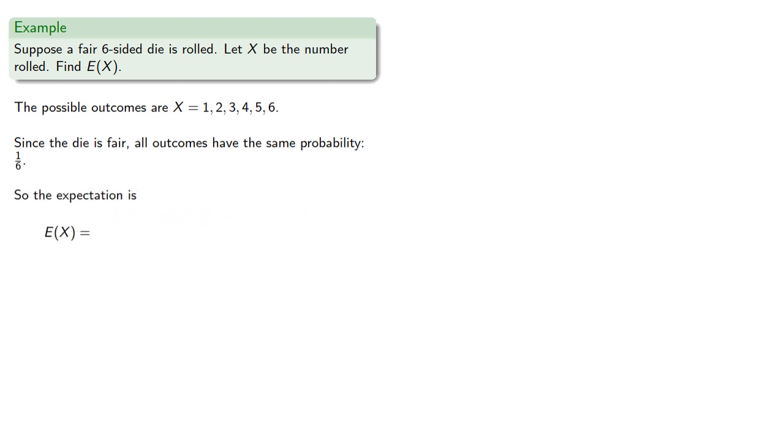And so the expectation is the sum of the products of the outcomes with their probabilities. Now, every term has a factor of one-sixth, so we'll remove that and find our expectation.